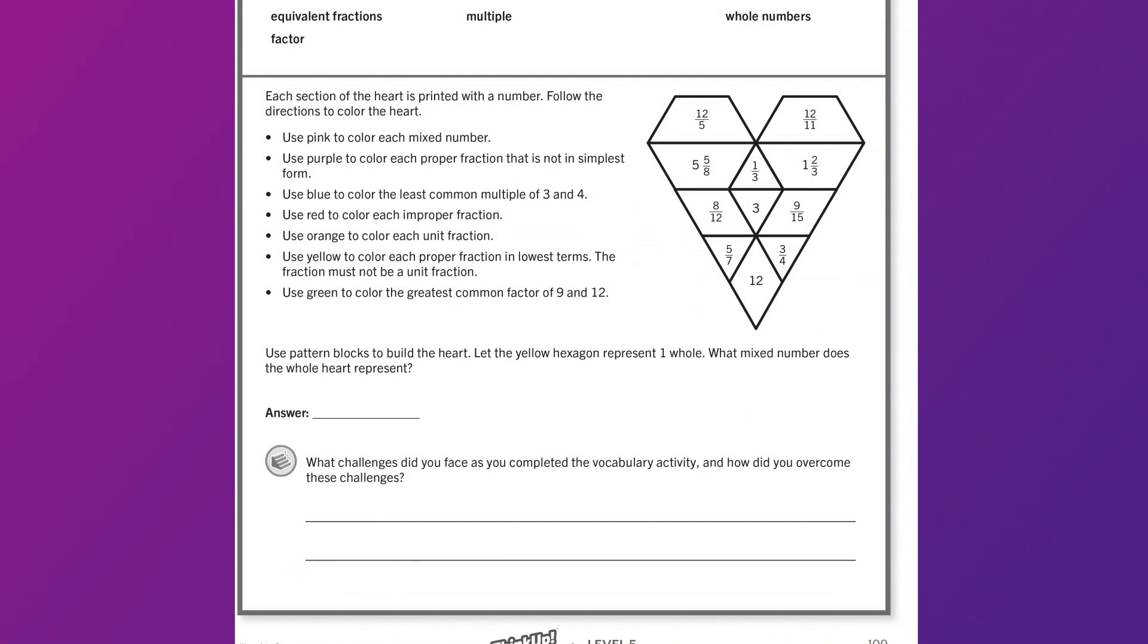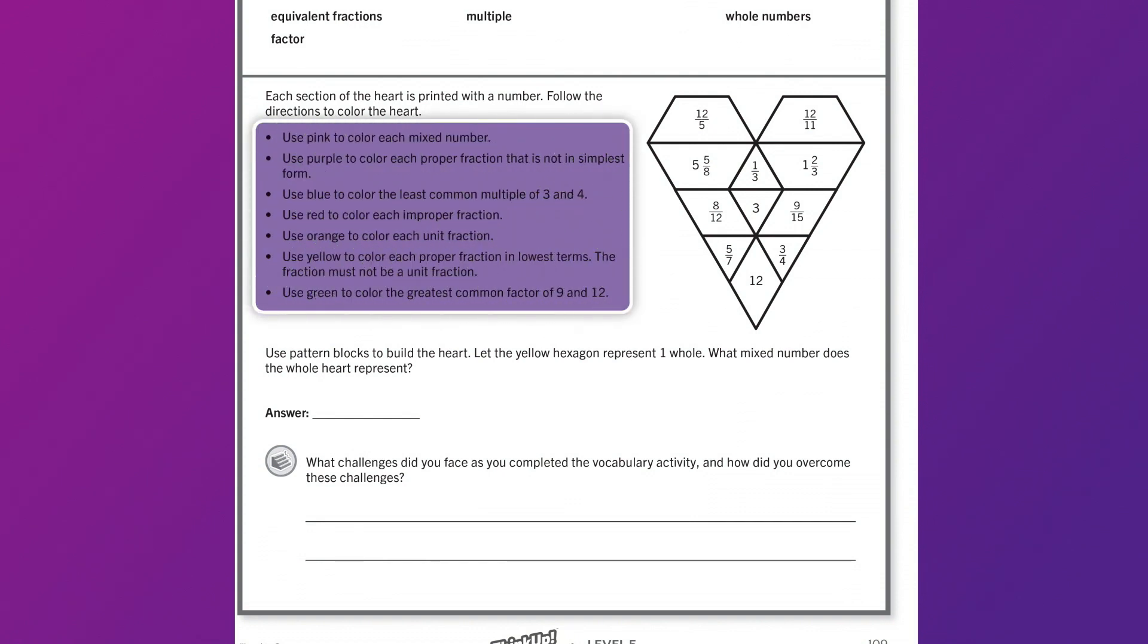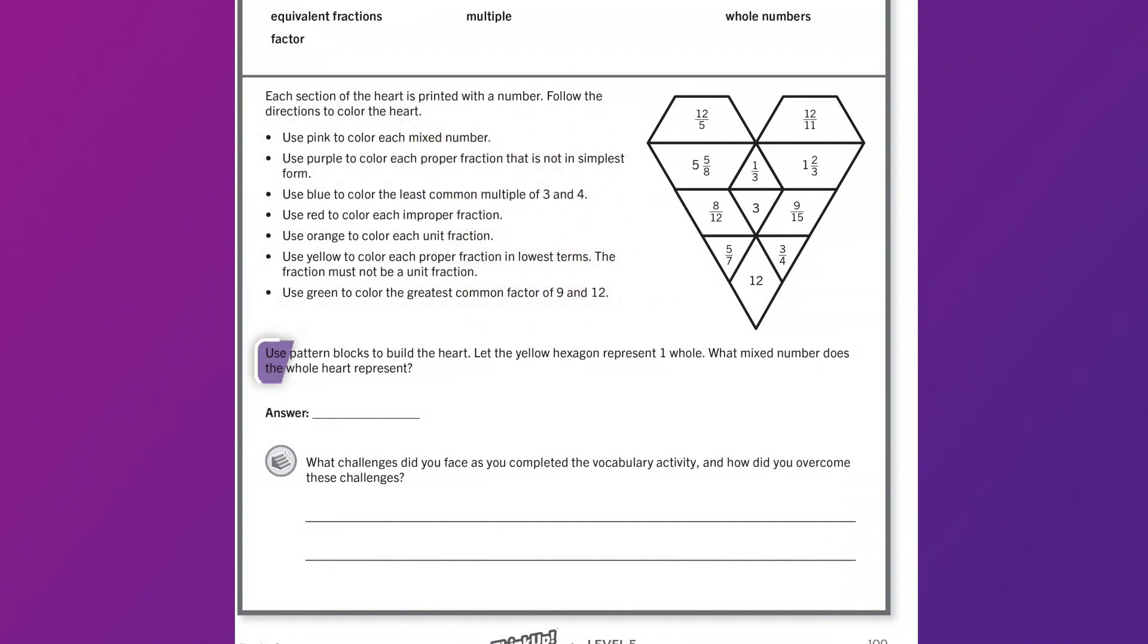Here, students will color code the heart by following the list of directions. The activity associated with unit 11 asks students to recreate the heart shape using pattern blocks. The yellow hexagon pattern block will represent one whole. Students will have to represent the heart shape as a mixed number. This is a great challenge for students. The yellow pattern blocks are easily identified in the shape.